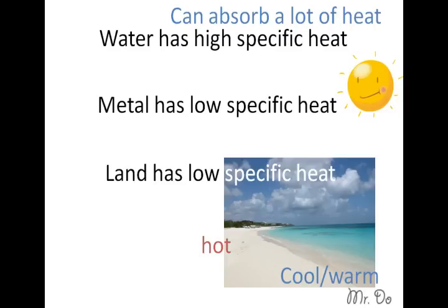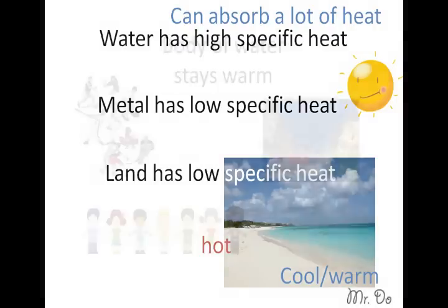Water can absorb a lot of heat from the Sun, so that's why it's able to stay warm and cool and not heat up. It doesn't release the heat, so waters are cooler than the land. That's what it means when water has high specific heat.